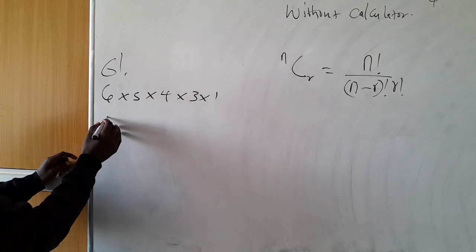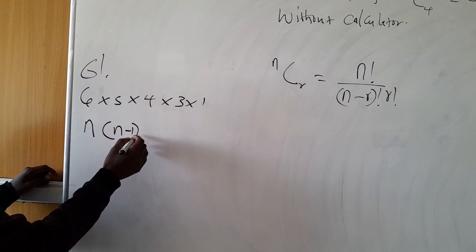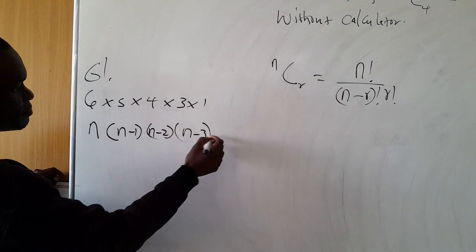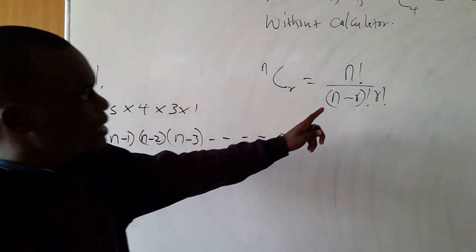Which means if you have n factorial, then it is going to be n into n minus 1, n minus 2, n minus 3, and so on. Are we together? So let's apply that one.